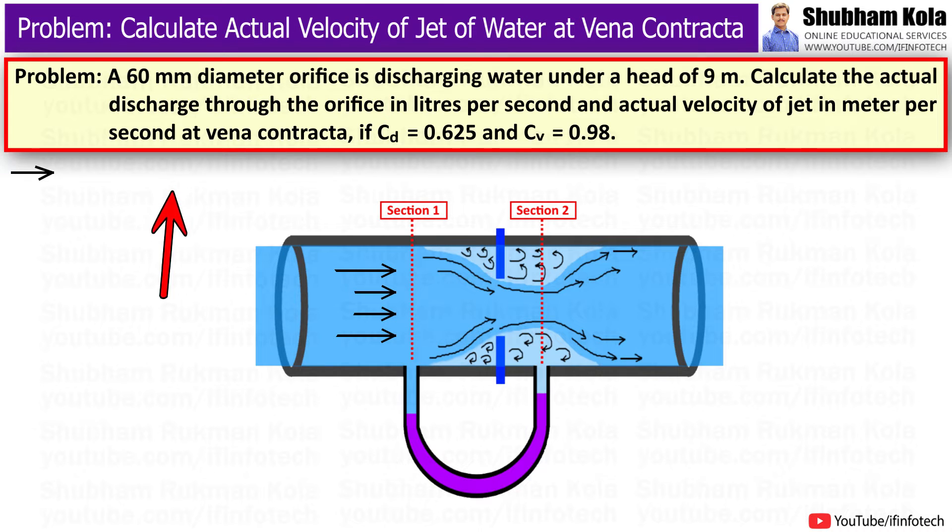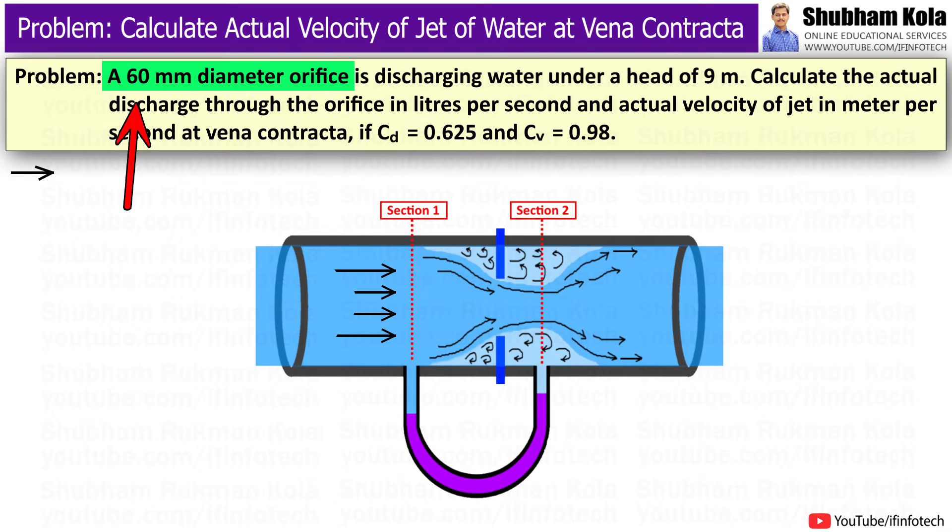The problem statement is: a 60mm diameter orifice is discharging water under a head of 9 meters. Calculate the actual discharge through the orifice in liters per second, and actual velocity of jet in meter per second at vena contracta, if CD = 0.625 and CV = 0.98.